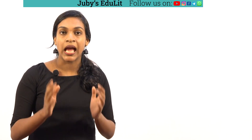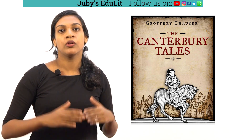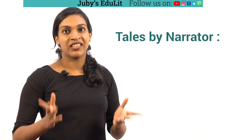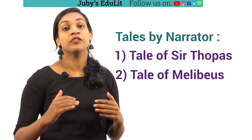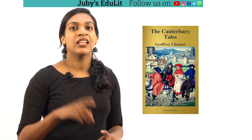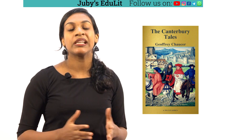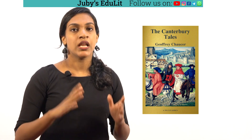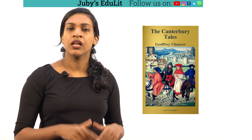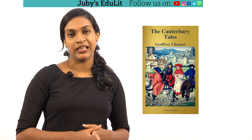Had that plan been completed, the Canterbury Tales would have been an immense work with over 100 tales. However, Chaucer could only finish 24 stories. These 24 tales include the narrator's two tales: the Tale of Sir Topas and the Tale of Melibius. The Tale of Melibius is a prose work. The only two tales written in prose in the Canterbury Tales are the Tale of Melibius by the narrator and the Parson's Tale. Some important tales commonly asked in the UGC NET exam are the Knight's Tale, Nun's Priest's Tale, the Wife of Bath's Tale, Reeve's Tale, and Miller's Tale.